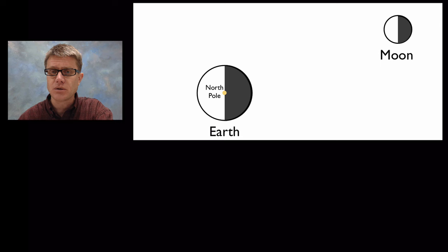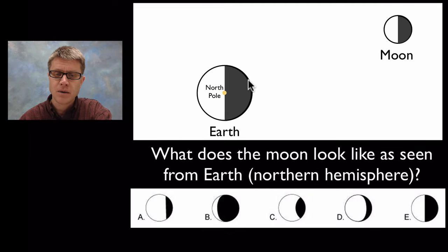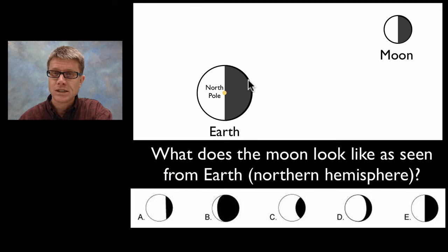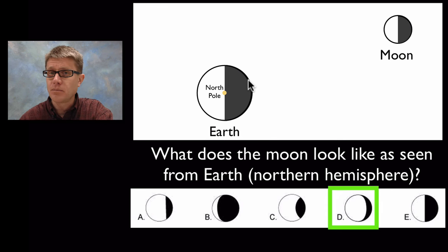Here is a diagram of the earth and the moon. The scale is okay but they would be way farther apart. You can see that one half of them is lit, and I've put the north pole on the earth so you can know where that is. If you were standing right here on the earth in the northern hemisphere, what would the moon look like as seen from the earth? The right answer is D. If you missed that one, your mental model of the way the earth and moon and the phases of the moon work might be ineffective.